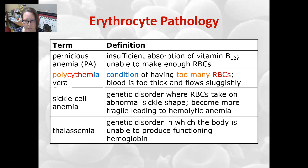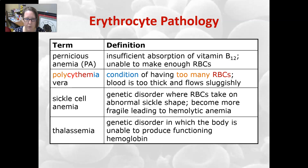If you don't have enough vitamin B12, that could be due to pernicious anemia. Polycythemia vera is a condition of having too many red cells — the blood is too thick and flows sluggishly. Sickle cell anemia is a genetic disorder where the red cells take on an abnormal sickle shape.